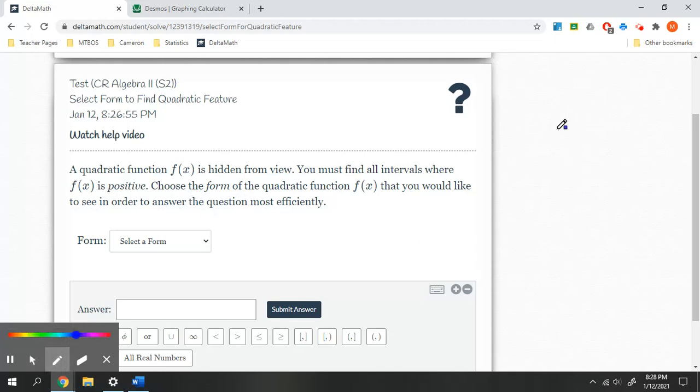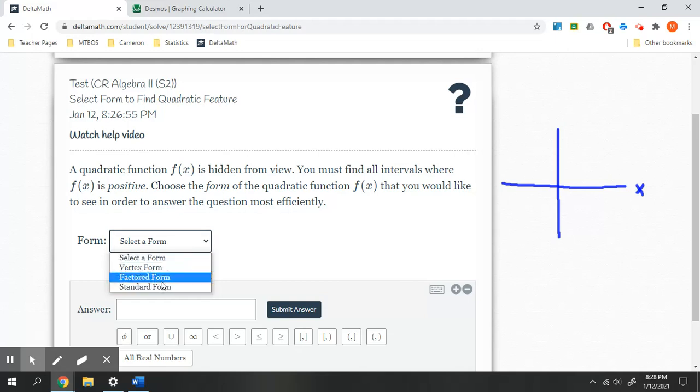All right, so if I'm looking for where this is positive, what I want to know is when does it cross the x-axis? So in order to find when it crosses the x-axis, the form that is going to be most beneficial is going to be factored form.